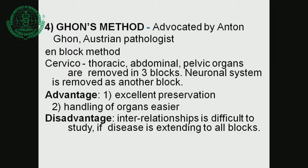Ghon's method, advocated by Ghon, an Austrian pathologist: en-bloc removal is used, with cervical, thoracic, abdominal, and pelvic organs removed in three blocks, and the neural system removed as another block. The advantage is excellent preservation of organs and easier handling. The disadvantage is that interrelationships are difficult to study if disease extends across all blocks.